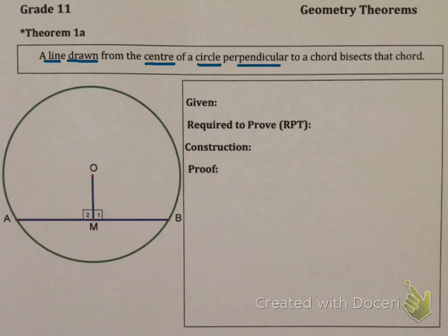Theorem 1 says a line drawn from the center of a circle perpendicular to a chord. What does that mean? If you have a circle and a line drawn from the center, and it happens to hit a chord—a chord is a line drawn from one side of the circle to the other—in this case I've highlighted chord AB. We have this line from the center and it hits this chord at 90 degrees or perpendicularly.